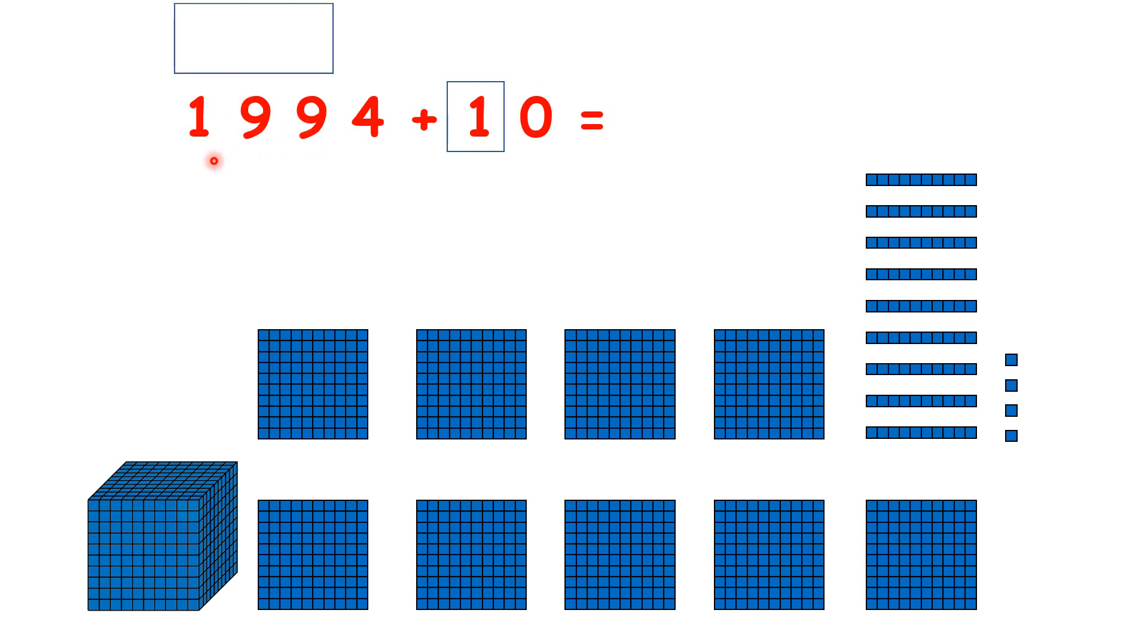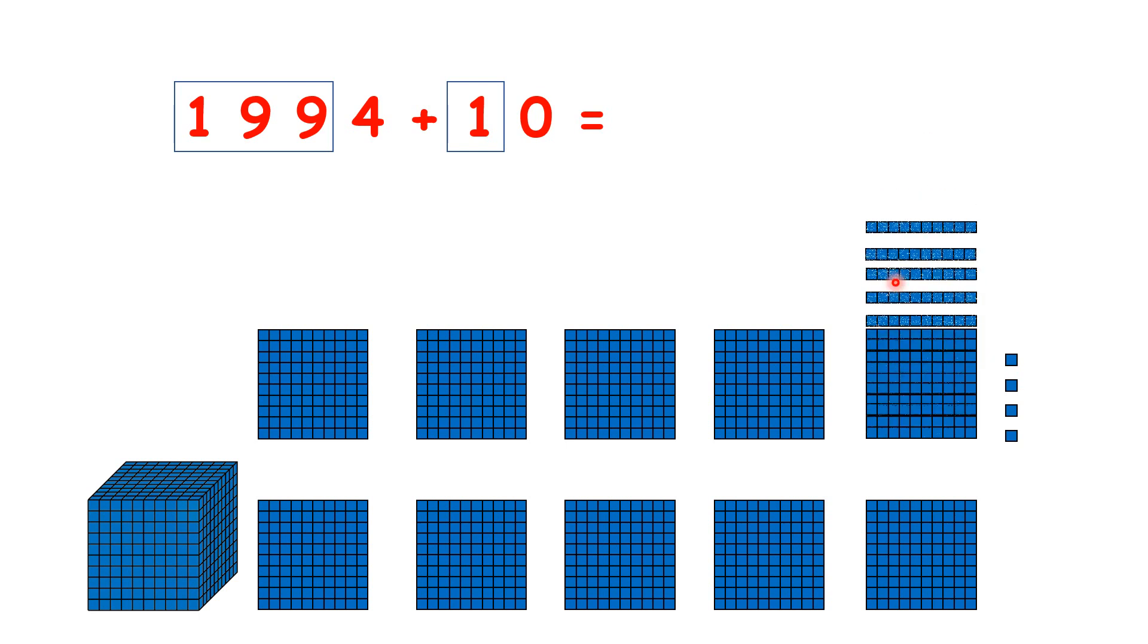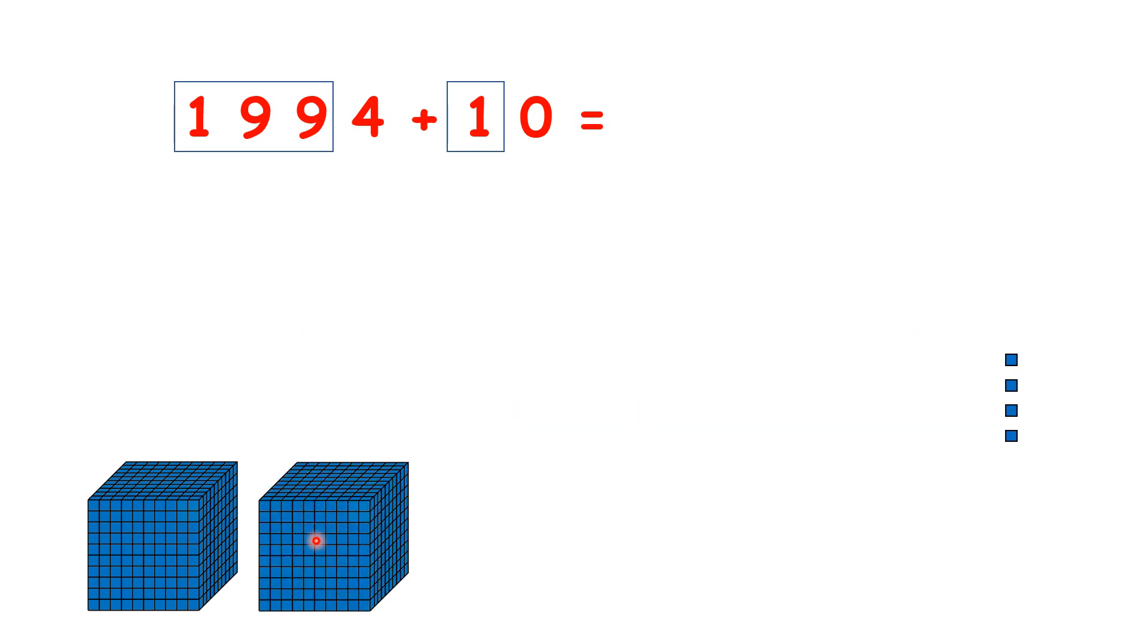So we need to look at the thousands, hundreds, and tens together. To see why we need to do that, let's add 10 to our number. We now have 10 tens, so let's regroup those 10 tens to make 100. But now we have 10 hundreds, so we need to regroup those to make another 1,000. So our answer is 2,004.